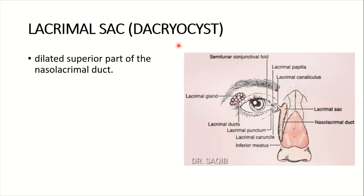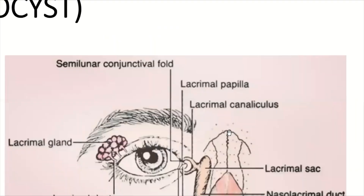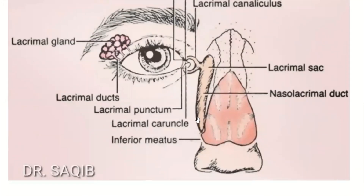The lacrimal sac, also called the dacryocyst, is the dilated superior part of the nasolacrimal duct. Here you can see the nasolacrimal duct and its dilated superior part, which is called the lacrimal sac.